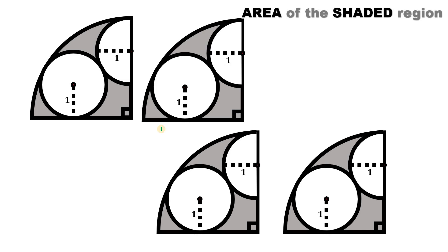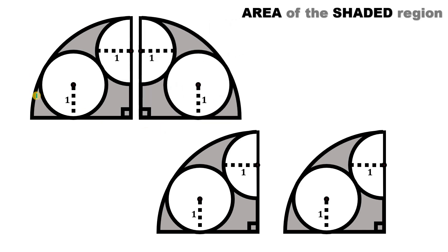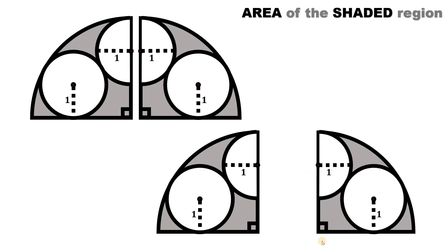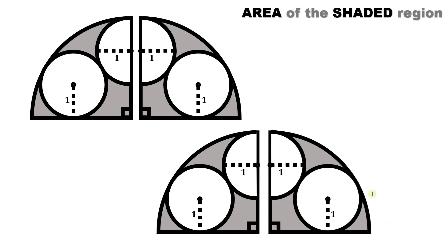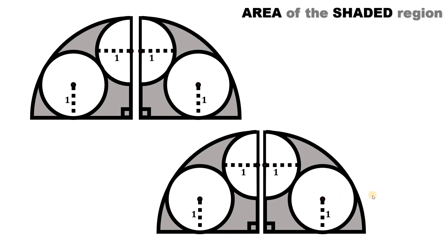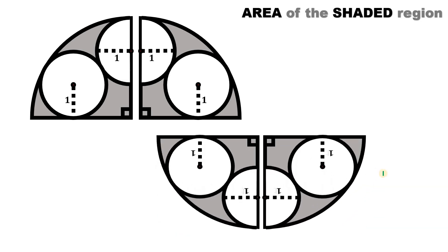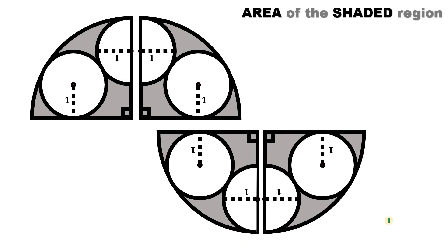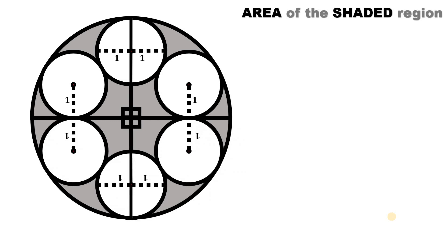We're going to flip it over like this so it looks like a semicircle. Then let's get another piece and flip it over. Now let's combine them and flip it again upside down to create another semicircle, and combine all of those quarter circles to have a full circle.